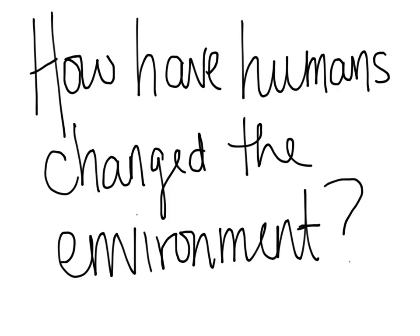When studying ecology, it's really important to look at not only how ecosystems naturally work, but also how we interact with ecosystems. So today, we're going to be looking at a few examples to answer this question: How have humans changed the environment? For each example, we'll look at some causes and some effects.